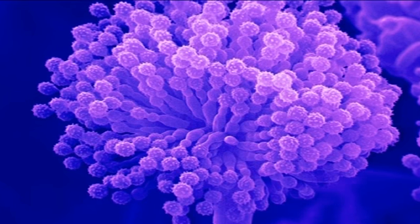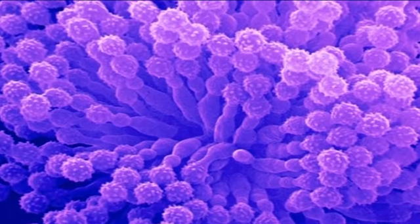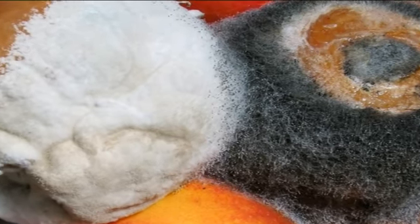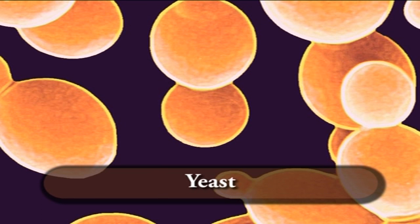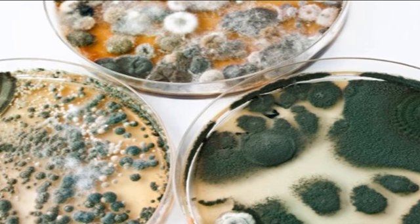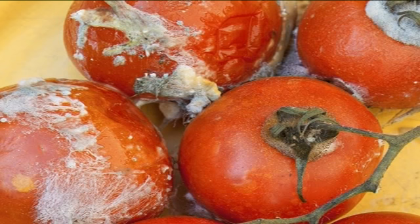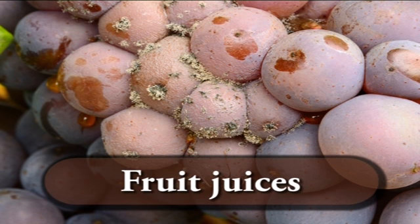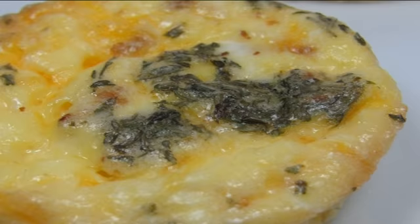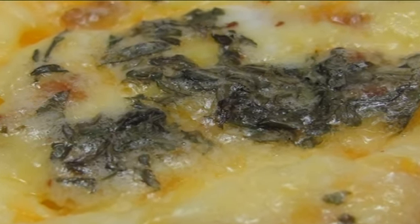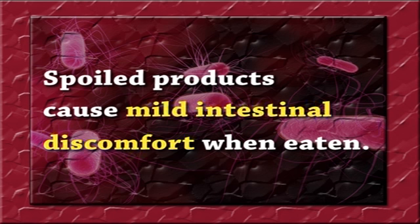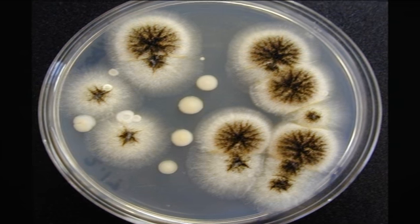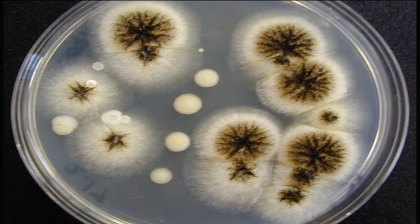Molds are microscopic fungi which live by breaking down dead organic matter. Since most human food consists of dead organic material, molds are an important cause of food spoilage. Numerous techniques are used to deter them. Yeast is not known to produce mycotoxins or to cause severe foodborne illness. However, several yeast species are known to cause food spoilage — most prefer to grow in fruit juices, syrup or jam. A few will also cause spoilage of cheese and meats. Spoiled products cause mild intestinal discomfort when eaten, but yeast are not regarded as causes of foodborne illness and do not produce toxins.